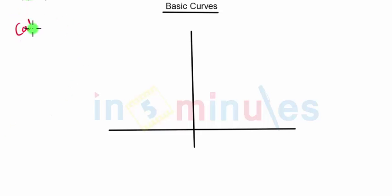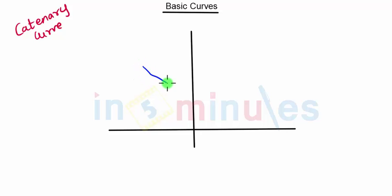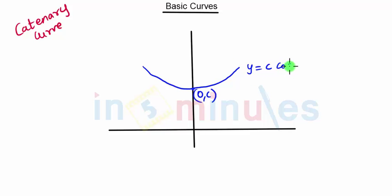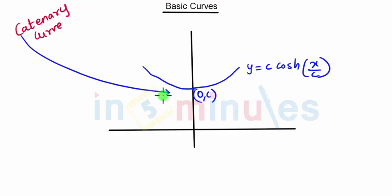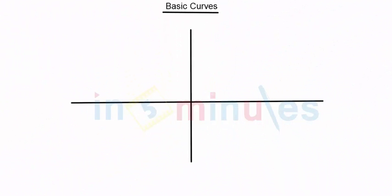Another curve is the catenary curve. It is not a very common curve, so you can ignore this, but anything can be asked in the exam, so just remember it. This curve looks something like a parabola but is very steep. The curve point will be (0, C) and the equation is y equal to C cosh(x/C). So this is our catenary curve, where C is also our parameter C.